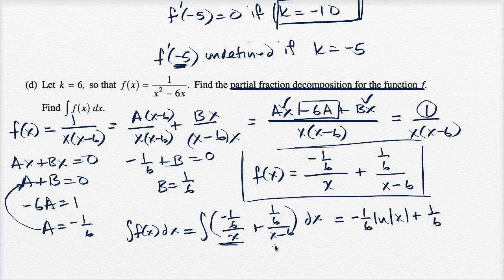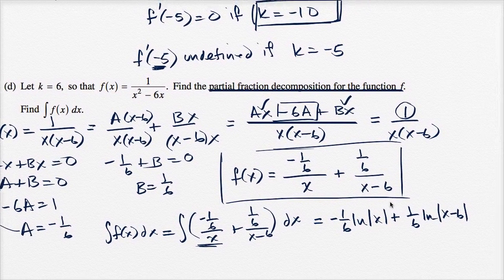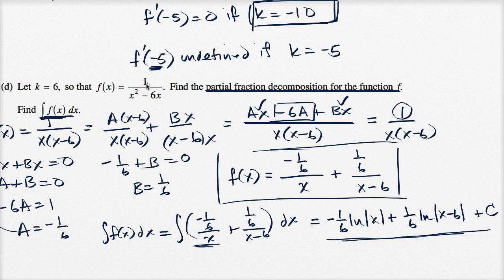For the second term, you could do u-substitution, but since the derivative of x minus six is just one, that derivative is already present. So the antiderivative is one sixth times the natural log of the absolute value of x minus six, plus C. Don't forget the plus C — this is an indefinite integral. And that partial fraction decomposition was quite useful in figuring out how to evaluate this antiderivative.